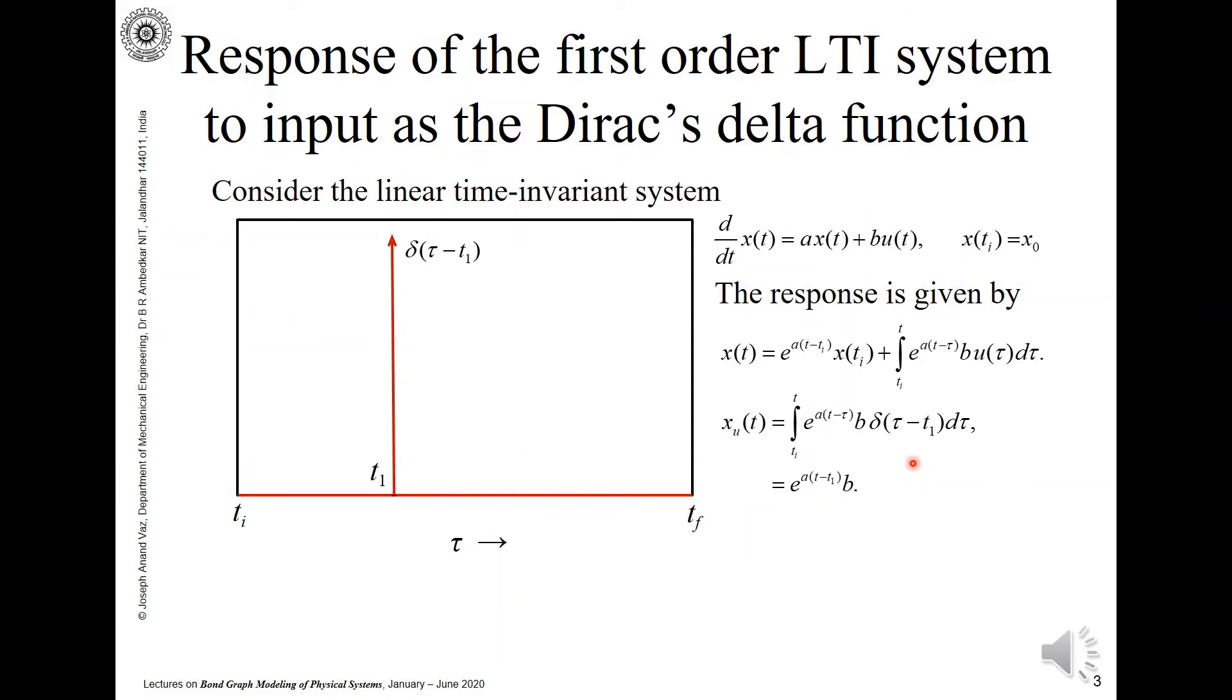This is equal to e raised to a times t minus t1 into b. This is because when you make tau equal to t1, just replace it.